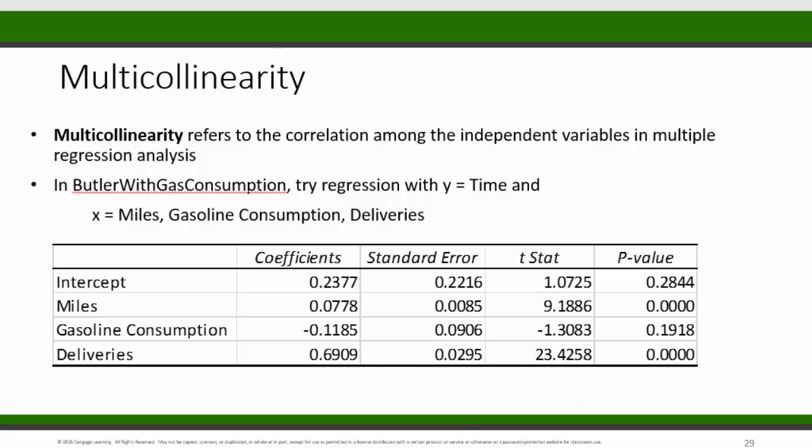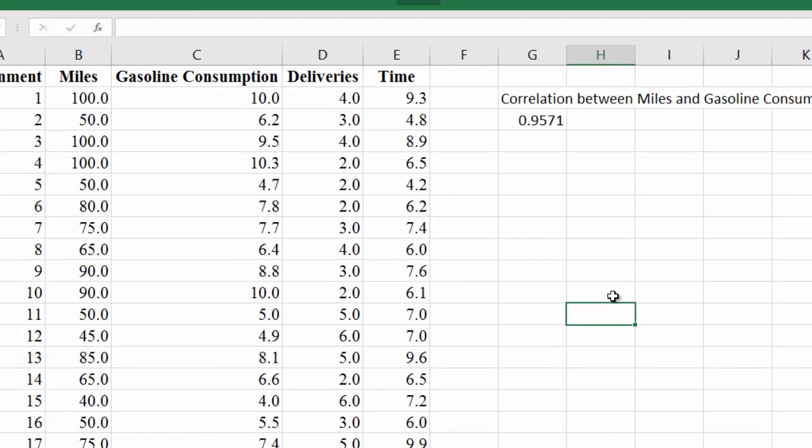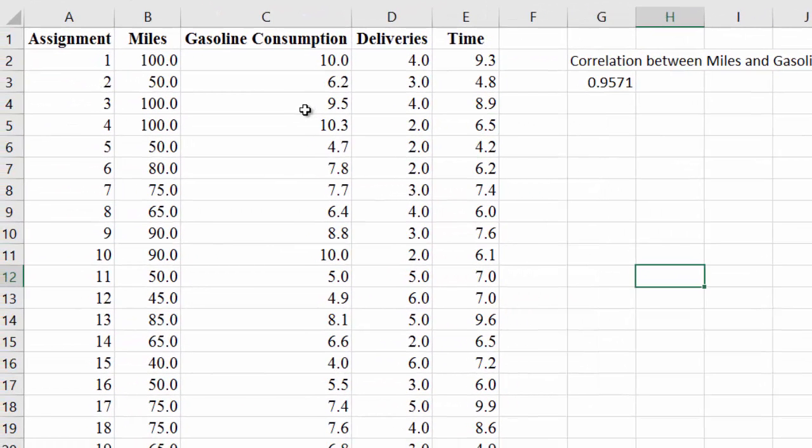That's in Butler with gas consumption. Gasoline consumption would be the number of gallons of gas used during the driving assignment. Now here we have three independent variables: miles, gasoline consumption, and deliveries, and the dependent variable time.